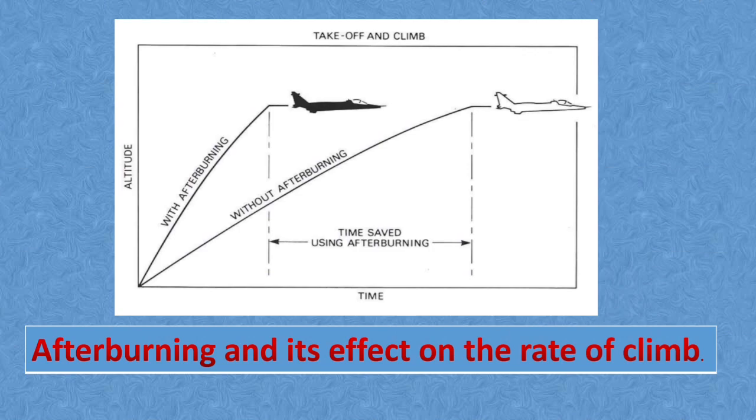Afterburners are primarily used on military aircraft to assist in takeoff or produce rapid climb-out speed. Afterburners can provide as much as a 100% increase in thrust, however the increase in fuel flow is 3 to 5 times higher than normal. This is all about afterburning system used in an aircraft.